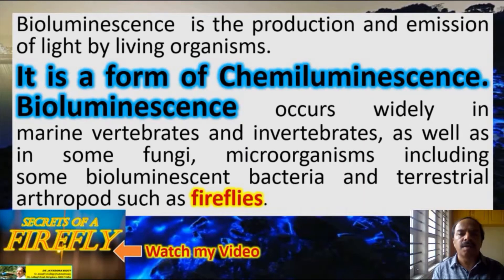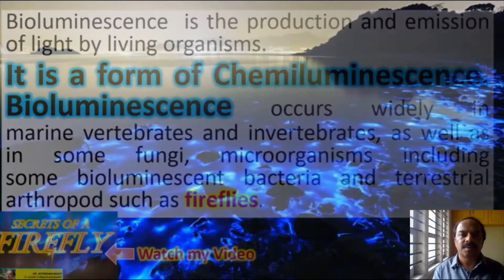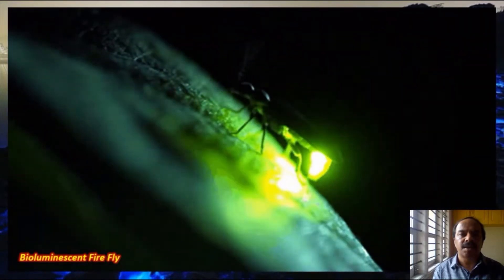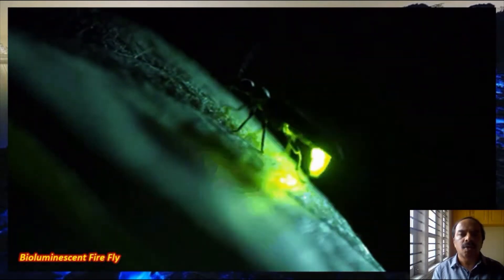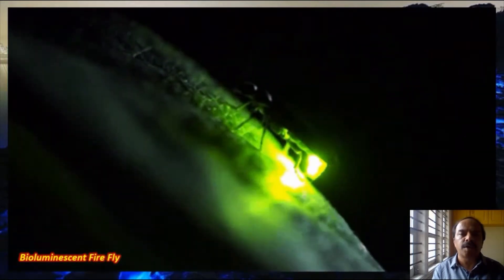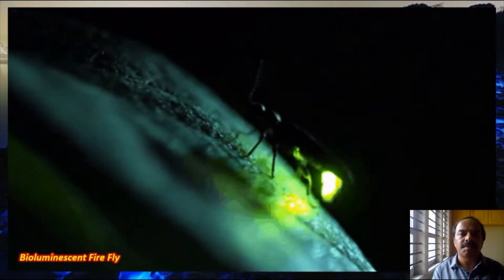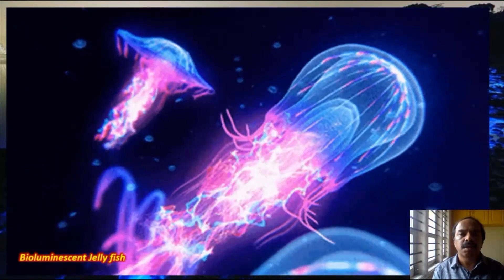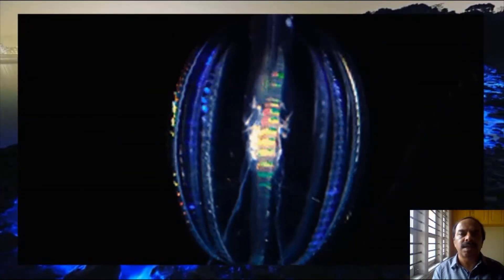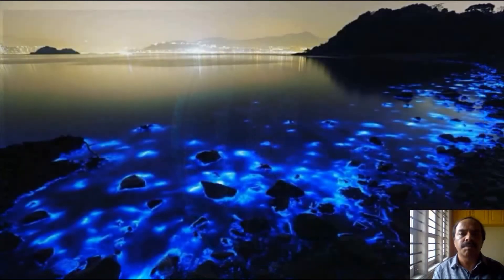Bioluminescence is a form of chemical reaction, hence it is called chemiluminescence — emission of light followed by a chemical reaction. It is exhibited by several plants and animals. One of the best examples is the firefly, which you can see here emitting light. The amount of light emitted is quite large relative to the size of the animal, and the energy utilized is very little. Even jellyfish exhibit bioluminescence.